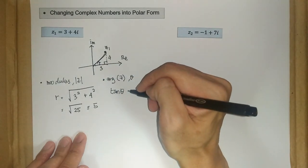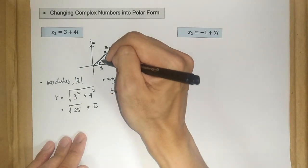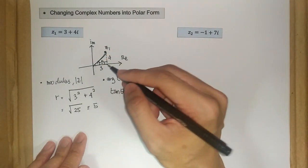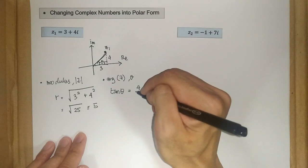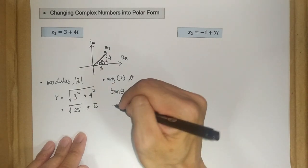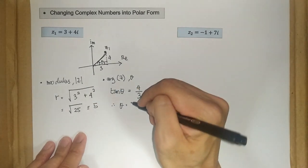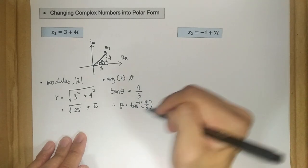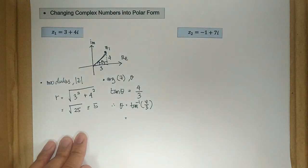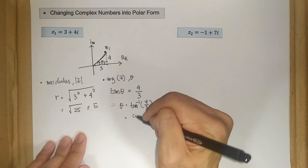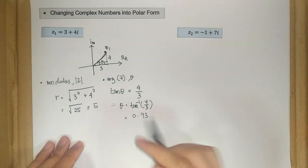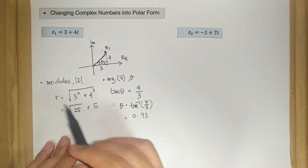So we have tan theta is equal to the opposite side over the adjacent. So we have 4 over 3. Therefore, theta is just the arctan of 4 over 3. It takes the value 0.93 radian. So we have our theta here, we have our r.